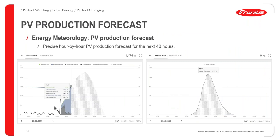Energy meteorology allows better planning by predicting PV production for the next 48 hours. For example, a screenshot taken on February 28th and another on March 1st shows an expected peak of about 1.3 kW of PV power. This helps plan maintenance schedules — knowing what power will be available, which loads can stay on, and whether backup energy sources are needed.